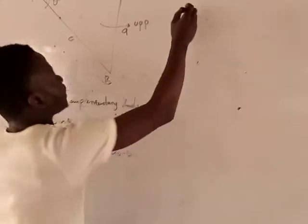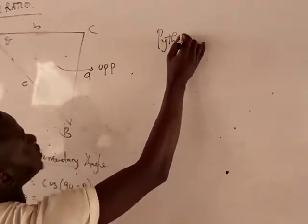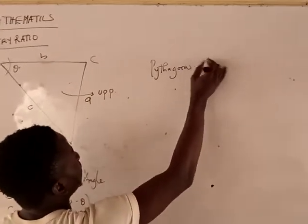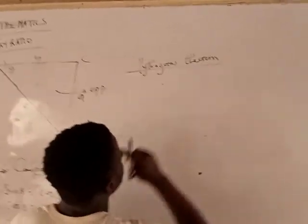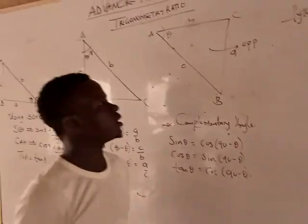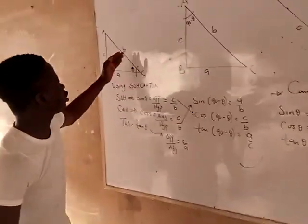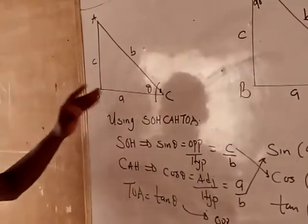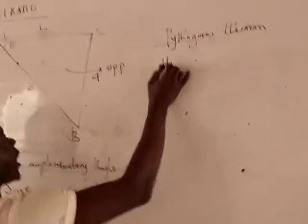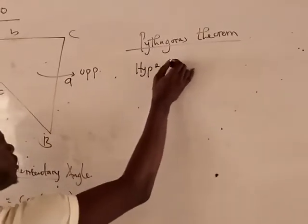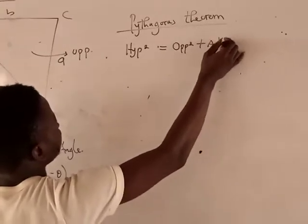So we can also use Pythagorean theorem to derive equations. This tells the value of the hypotenuse squared. Hypotenuse squared equals opposite squared plus adjacent squared.